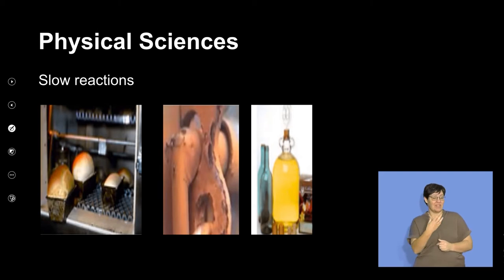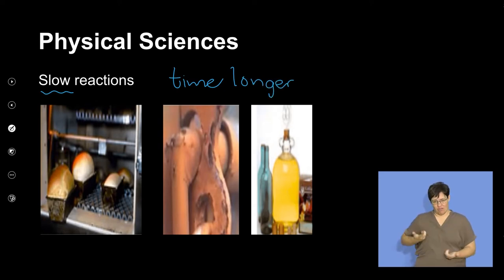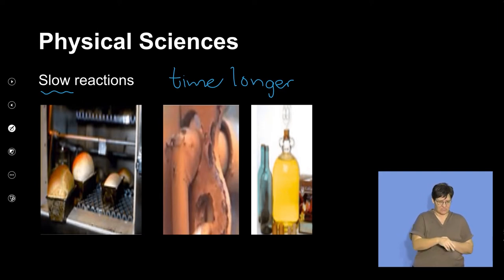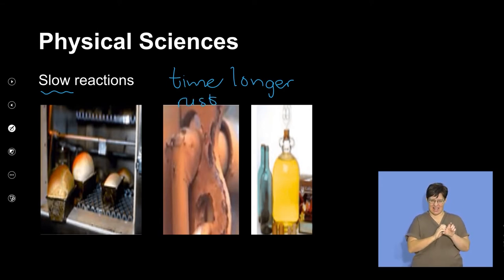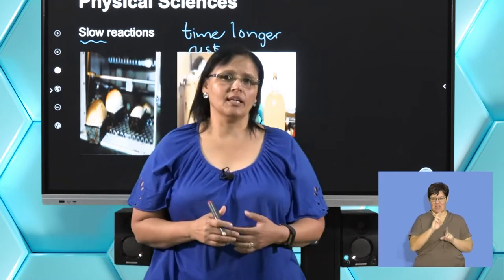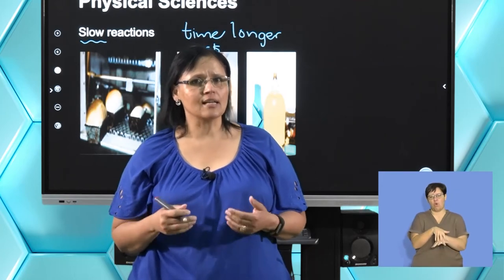We have three pictures of slow reactions. A slow reaction means the time for the reaction is longer. For example, baking bread uses yeast but isn't ready immediately — it takes one to two hours. Rusting happens over long times where iron is exposed to oxygen and moisture in the air and becomes brownish on the outside. Another example is the fermenting of fruit juices to make wine.